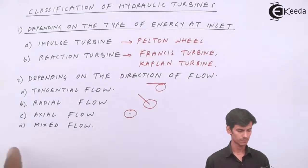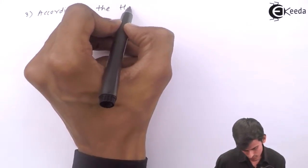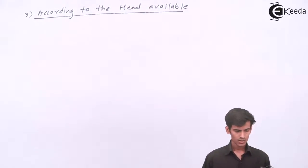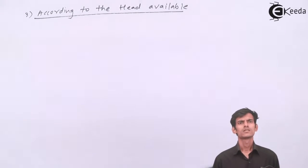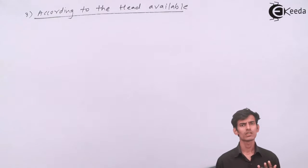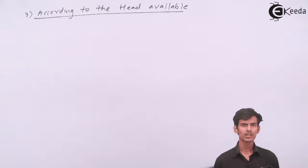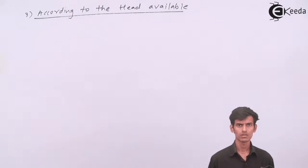The third way of classifying a turbine is by the head available, which comes from the height of the dam. Depending on the head, you can get power. They are classified into three types: low head, medium head, and high head. Let's see what each of those means.